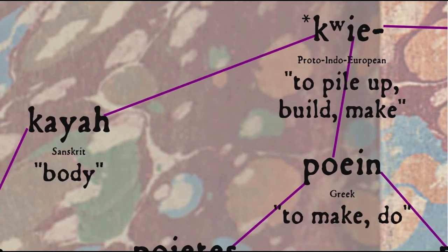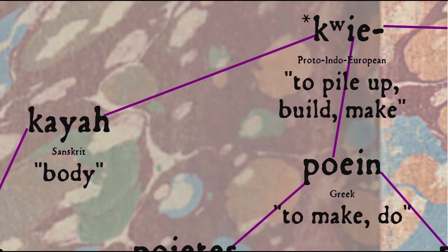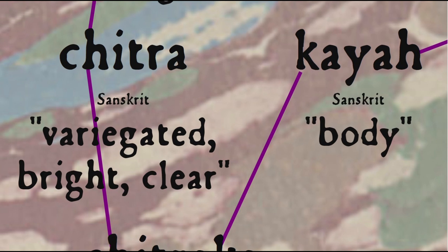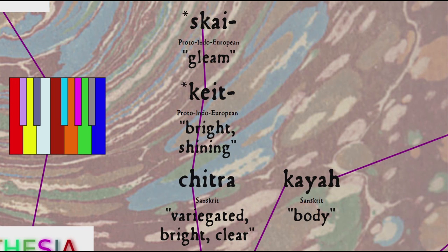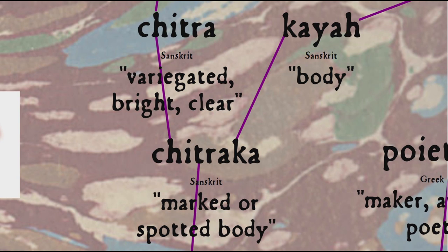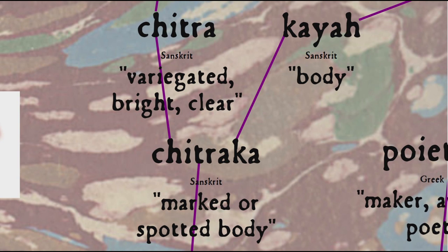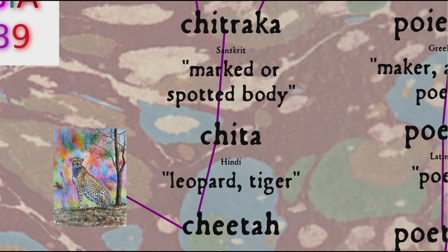In a somewhat more phonologically direct path, that root also became Sanskrit kaya, with the sense body, which was combined with the Sanskrit word chitra, meaning distinctively marked, variegated, many-coloured, bright or clear, from Proto-Indo-European kite, bright or shining, probably ultimately from the root sky, to gleam, which also gives us the word shine. The resulting Sanskrit compound chitraka, in the sense marked or spotted body, was used to refer to a leopard or tiger. This was shortened simply to cheetah in Hindi, and from there it was borrowed into English as cheetah.